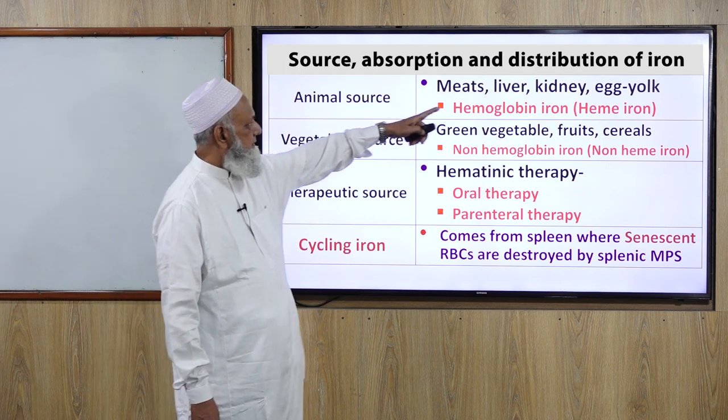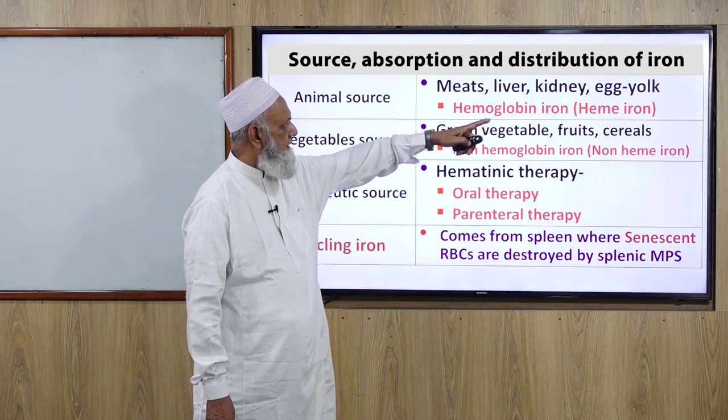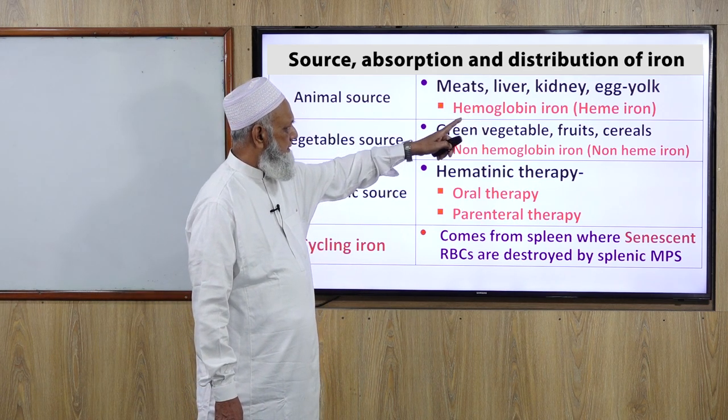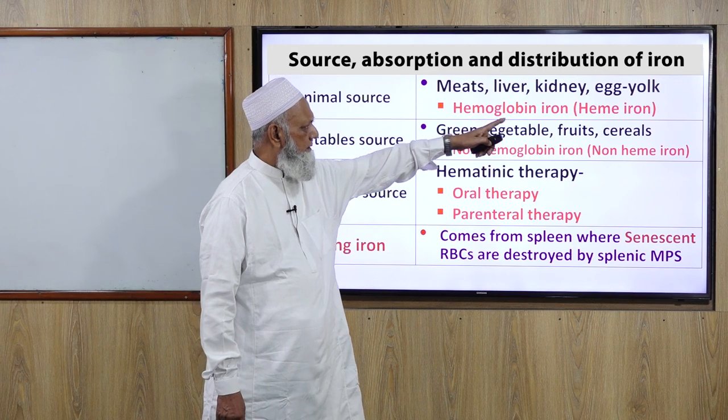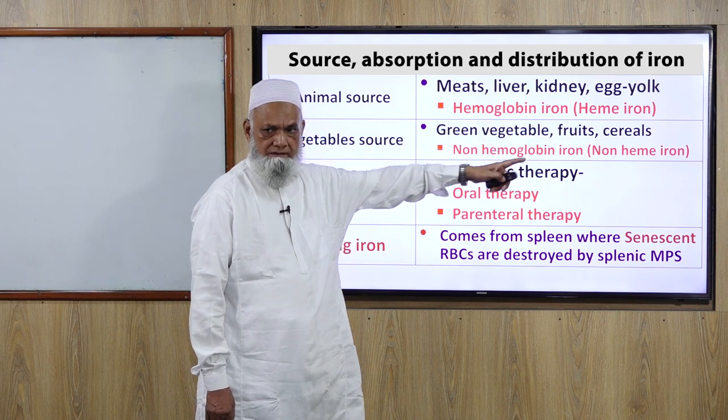Animal sources include meats, liver, kidney, egg yolk. Iron from animal sources is called hemoglobin iron or heme iron.